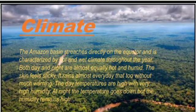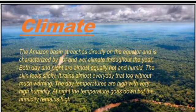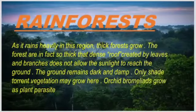Climate. The Amazon Basin stretches directly on the equator and is characterized by hot and wet climate throughout the year. Both day and night are almost equally humid and hot. The skin feels sticky. It rains almost every day, that too without much warning. The day temperatures are high with very high humidity. At night, the temperature goes down, but the humidity remains the same.